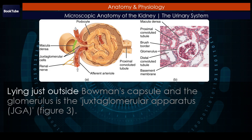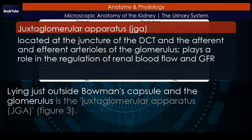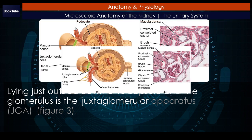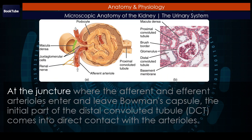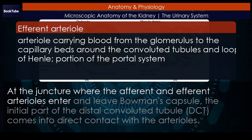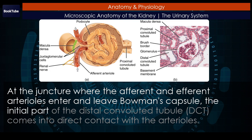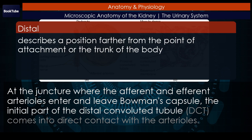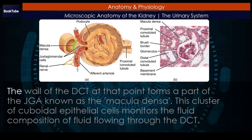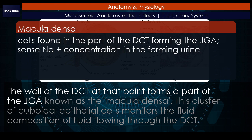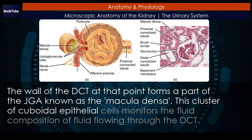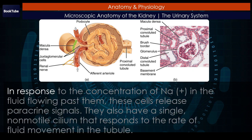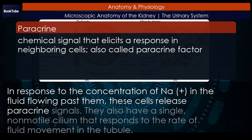Lying just outside Bowman's capsule and the glomerulus is the juxtaglomerular apparatus (JGA). (Figure 3.) At the juncture where the afferent and efferent arterioles enter and leave Bowman's capsule, the initial part of the distal convoluted tubule (DCT) comes into direct contact with the arterioles. The wall of the DCT at that point forms a part of the JGA known as the macula densa. This cluster of cuboidal epithelial cells monitors the fluid composition of fluid flowing through the DCT, in response to the concentration of Na⁺ in the fluid flowing past them, and these cells release paracrine signals.